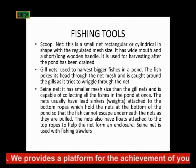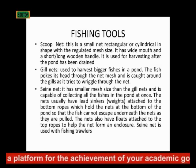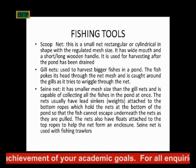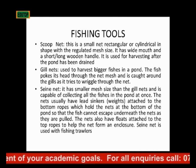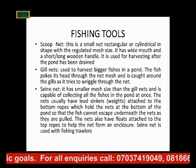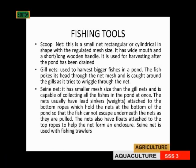In these seine nets, they usually have a lead sinker or weight attached to the bottom rope, which holds the net at the bottom of the pond so that fish cannot escape underneath as the net is pulled. The nets also have floats attached to the top rope to help the net form an enclosure.